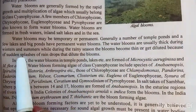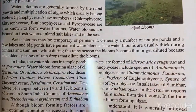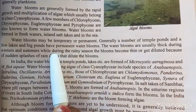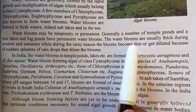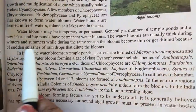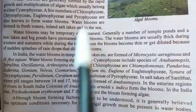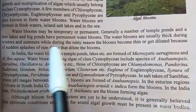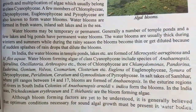Water blooms develop quickly during winter and summer. During rain, the bloom appears in a thin, dilute form. The rain supplies water to the system, and when raindrops suddenly dilute the water body, the water bloom becomes diluted.